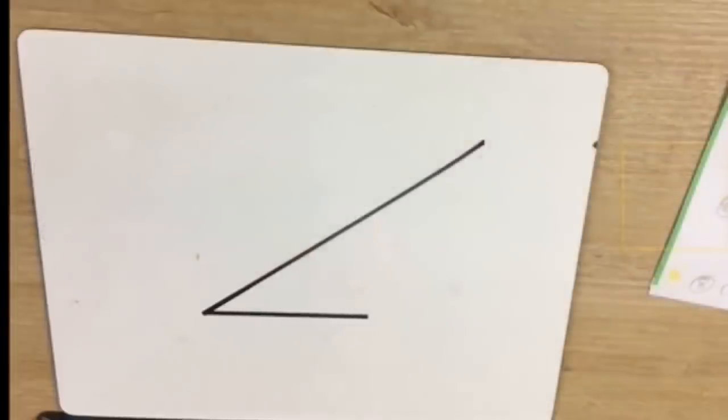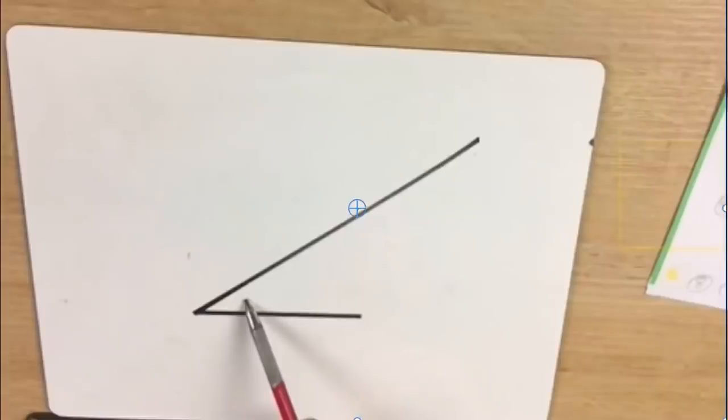Does measuring an angle between two lines require that the lines be connected into a triangle? To get an accurate measurement. How will connecting it to a triangle change the measurement of that angle? You don't need a triangle to measure just the angle of two lines. You do not need a triangle. You're right.